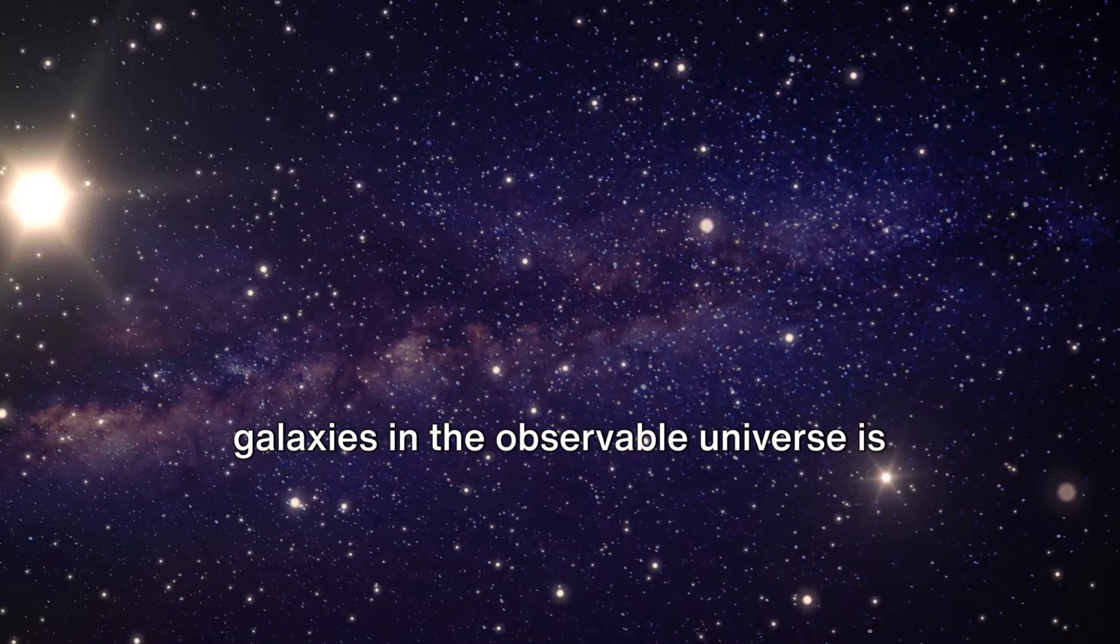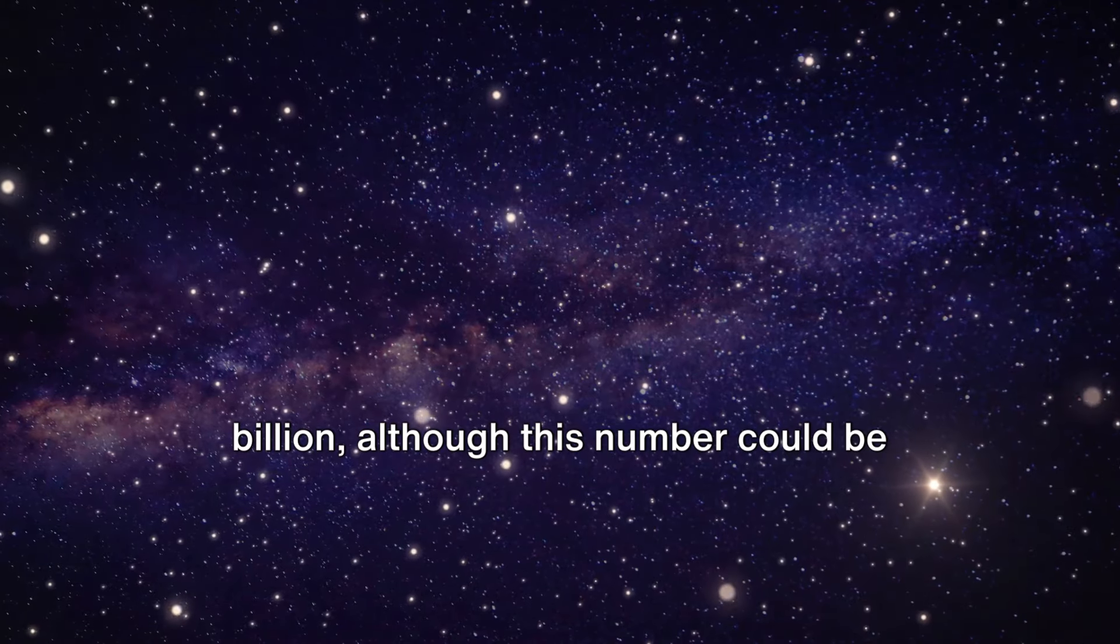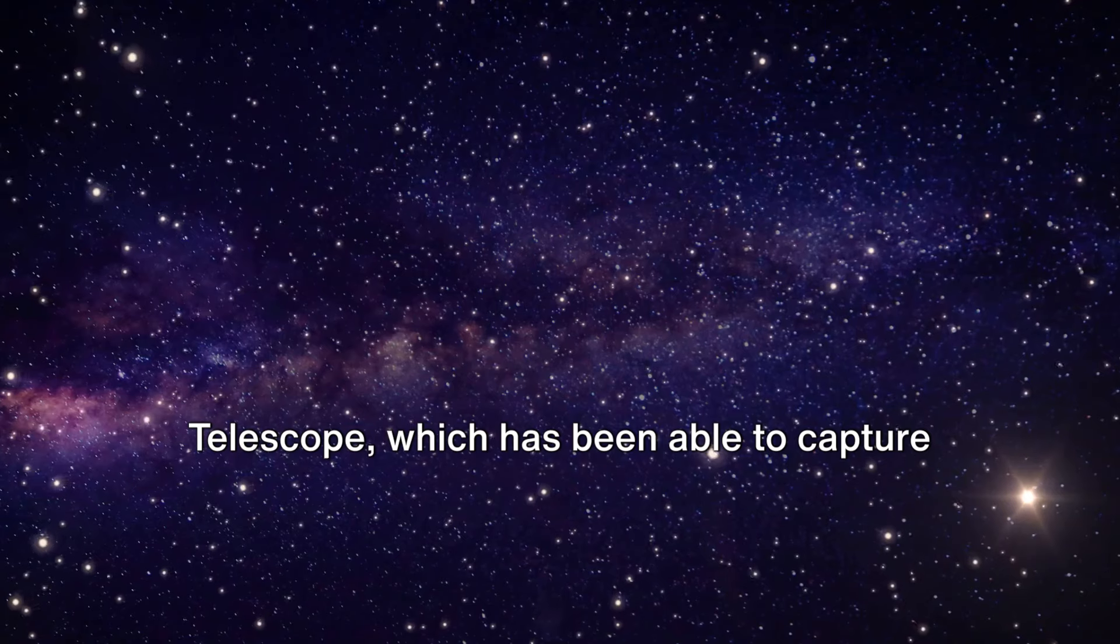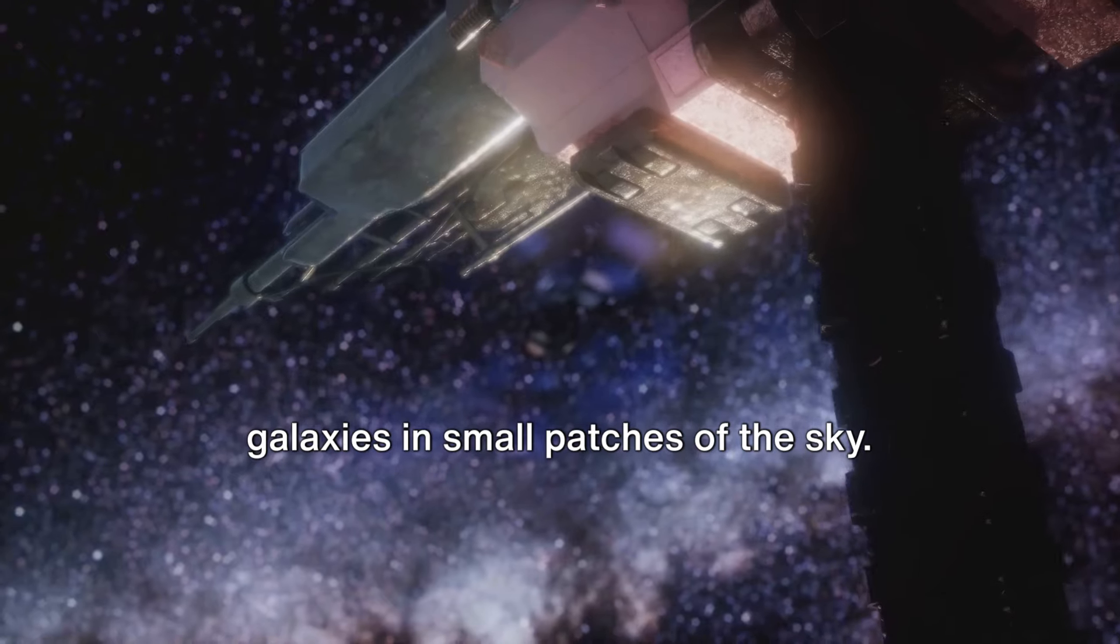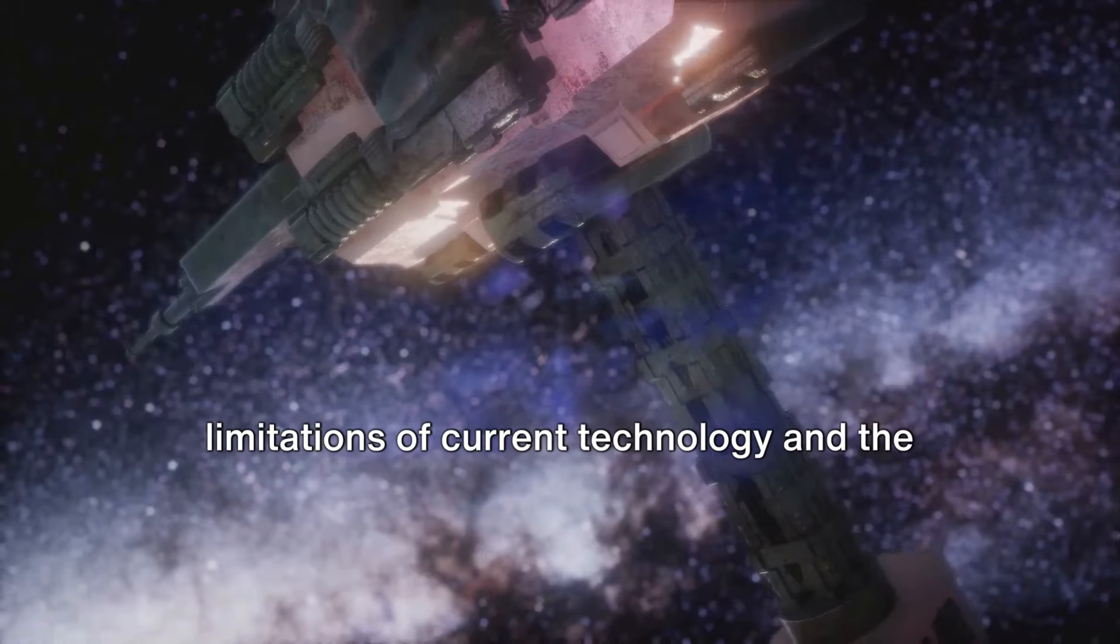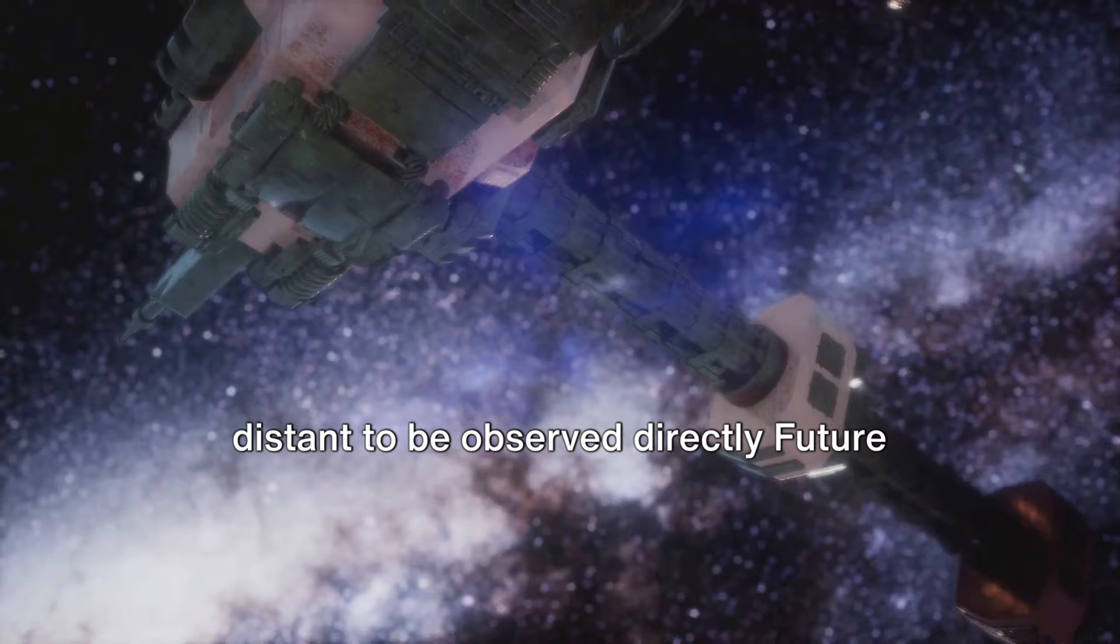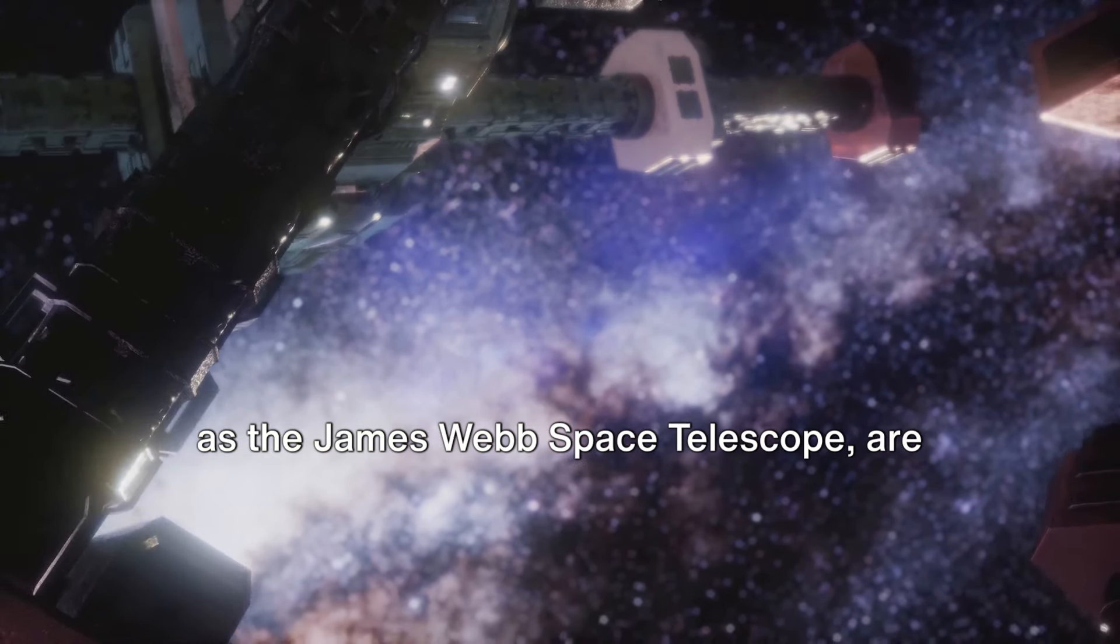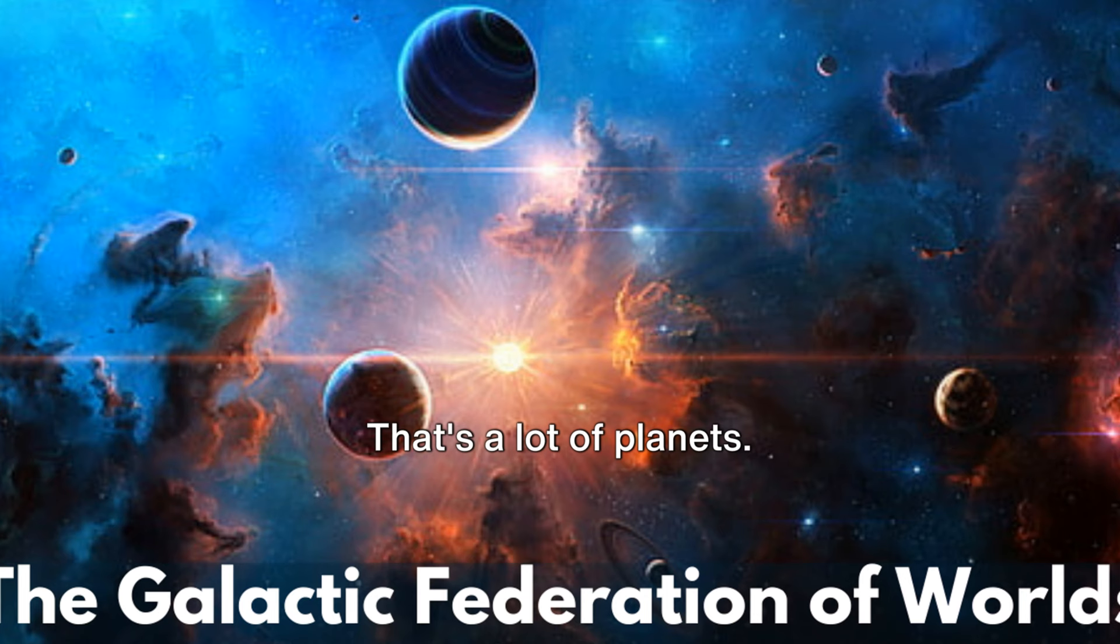The number of galaxies in the observable universe is estimated to be around 100 billion to 200 billion, although this number could be much higher. This estimate comes from observations made by telescopes like the Hubble Space Telescope, which has captured deep-field images revealing thousands of galaxies in small patches of the sky. Future advancements in telescope technology, such as the James Webb Space Telescope, are expected to reveal even more galaxies. That's a lot of planets.